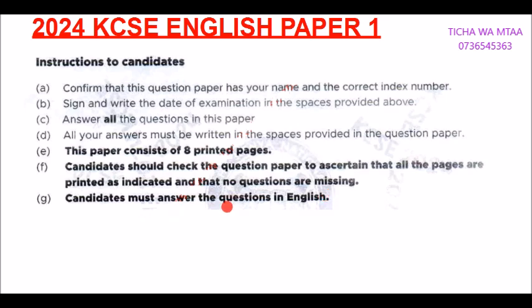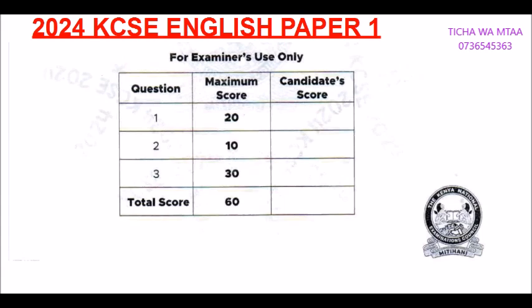The candidates must answer the questions in correct English. On the same page we have the examiner's use only section. This is where the examiner will fill the marks — for example, question one out of 20, question two, question three — and then finally we have the total. Those are the instructions that have been given.